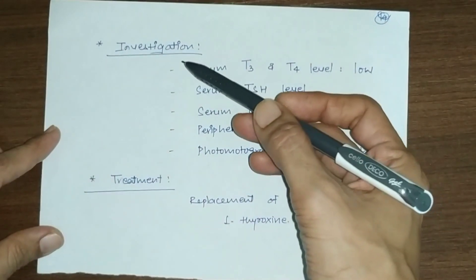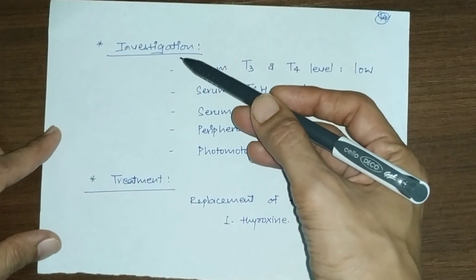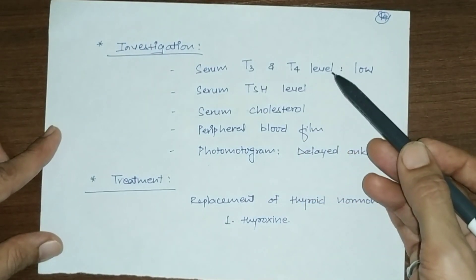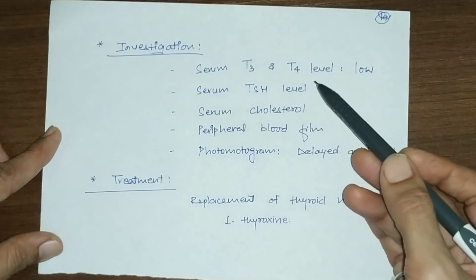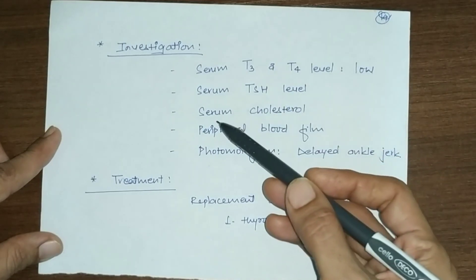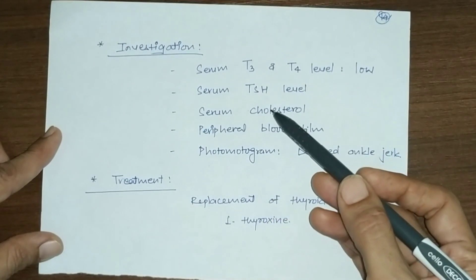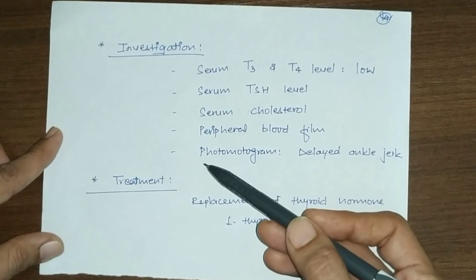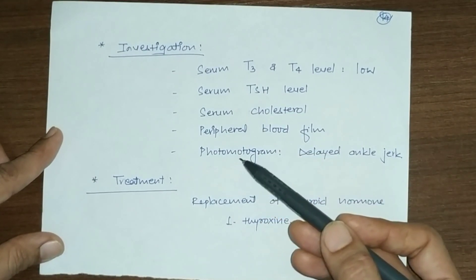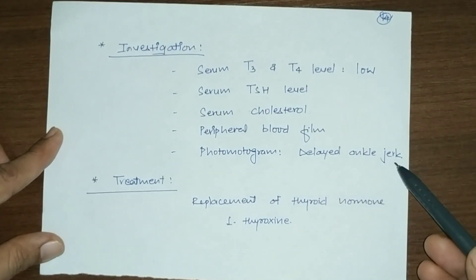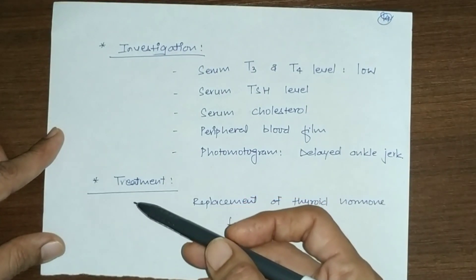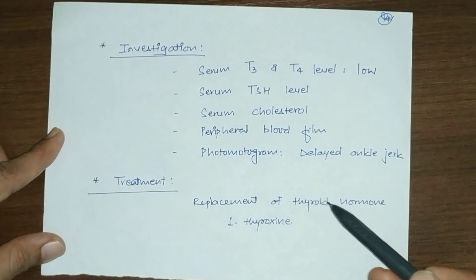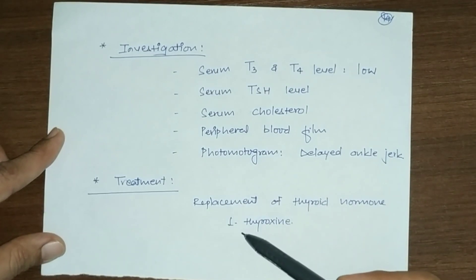Investigations in hypothyroidism: serum T3 and T4 levels are low; serum TSH level increases; serum cholesterol also increases; peripheral blood film shows anemia. Photomotogram shows delayed ankle jerk. Treatment consists of replacement of thyroid hormone with L-thyroxine.